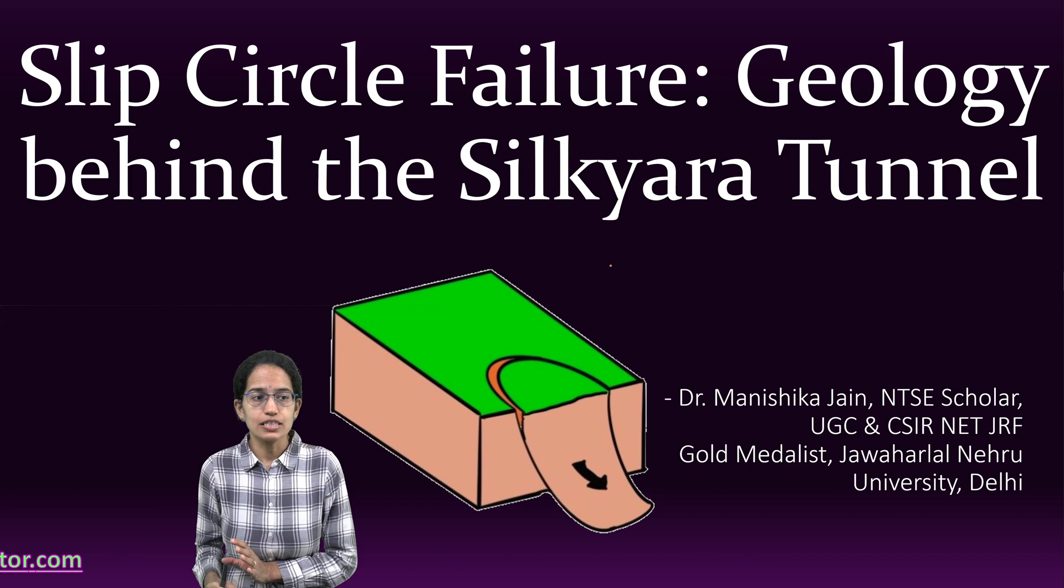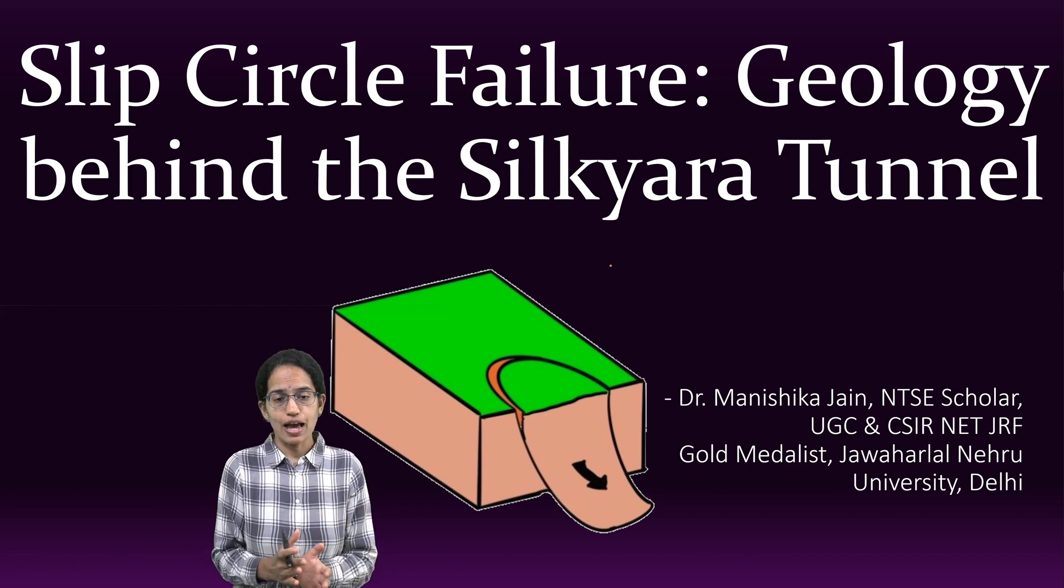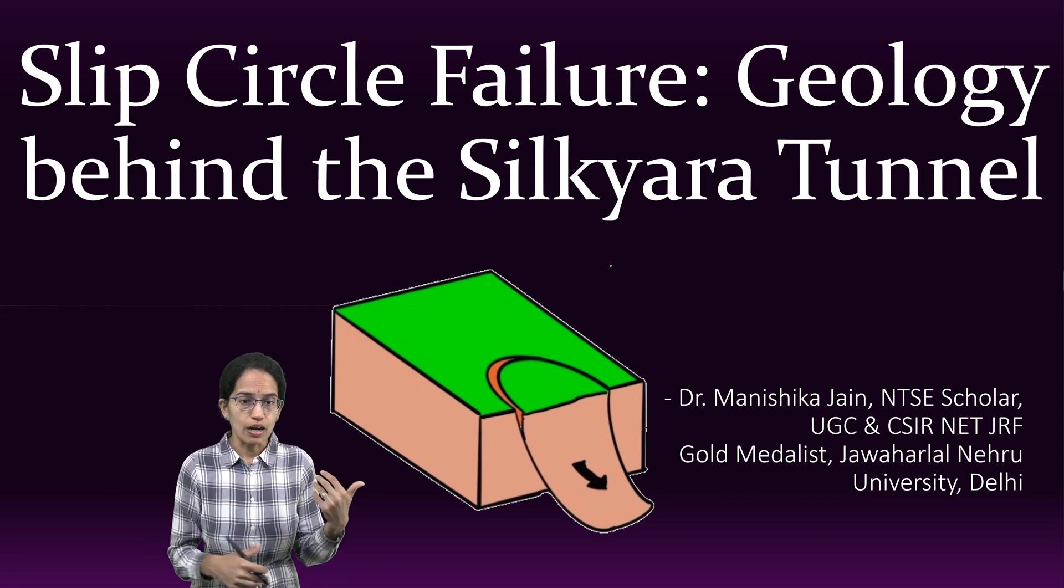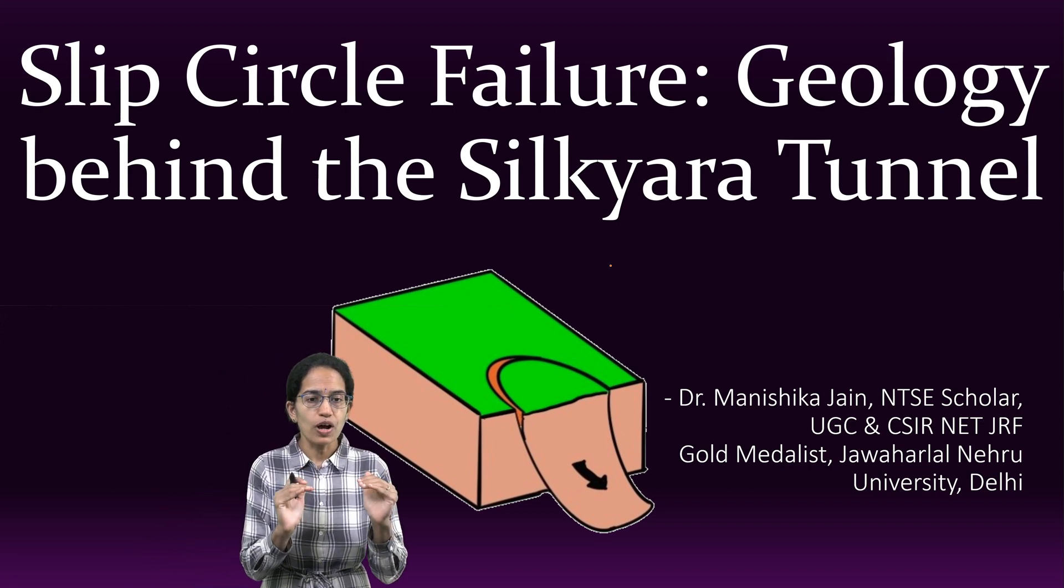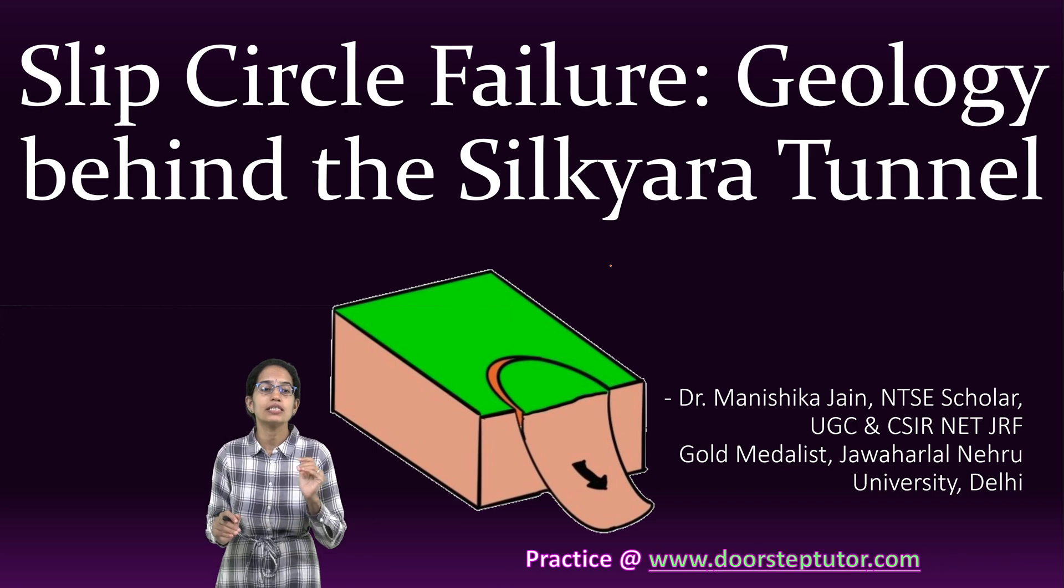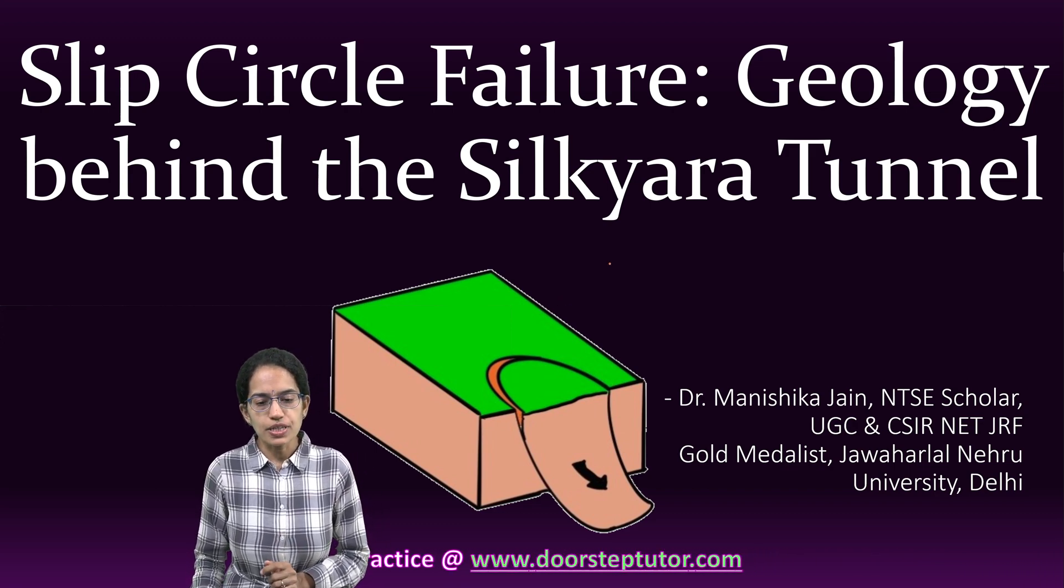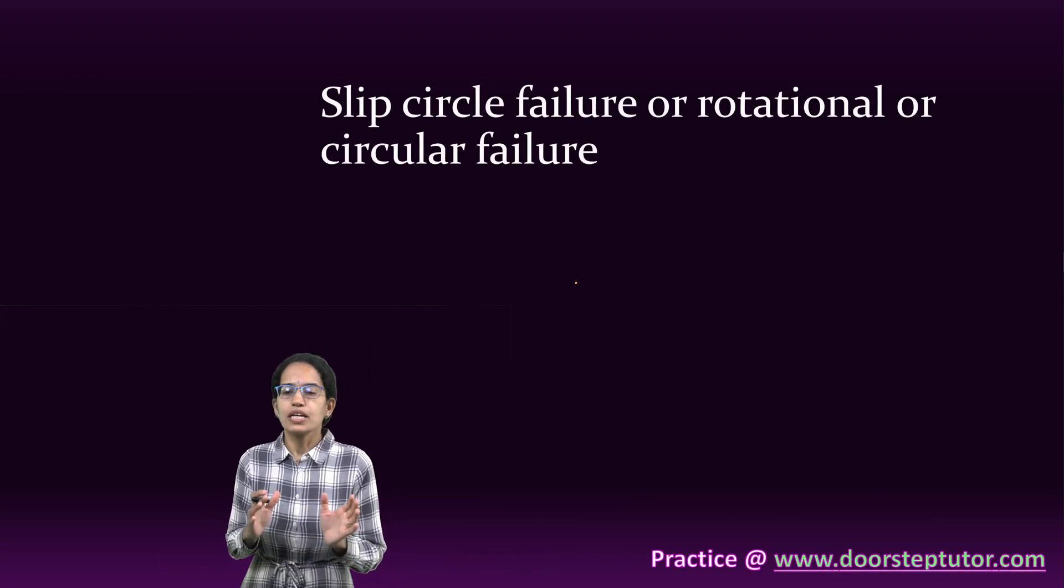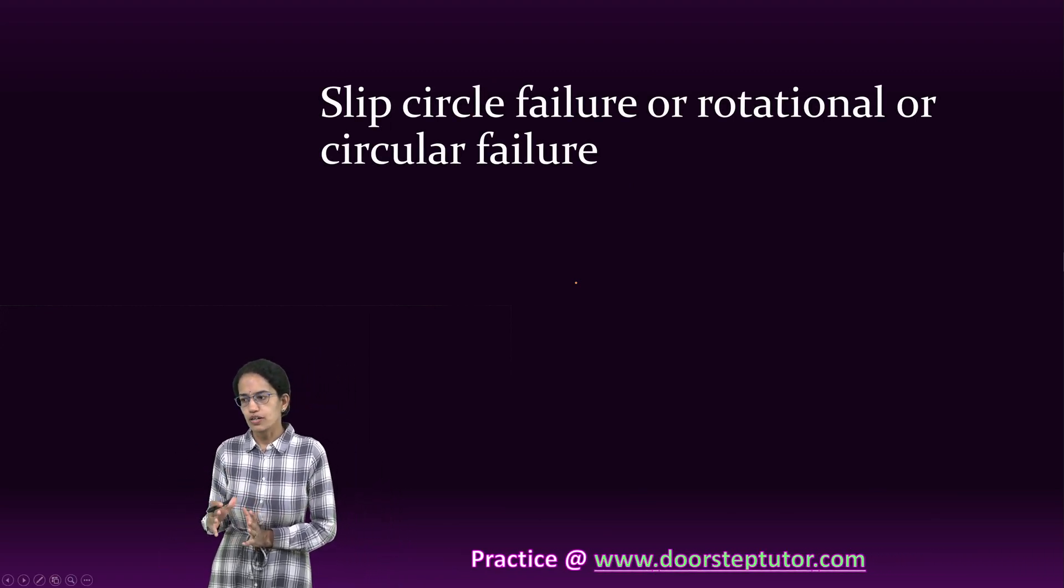The real reason why it happened is yet to be found once the people are out of the tunnel, but so far what has been identified is that the main reason is slip circle failure. Slip circle failure is also known as rotational failure and is also called circular failure.